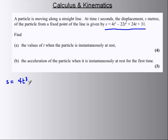So what we are given is the displacement s = 4t³ - 22t² + 24t + 31. Differentiate to get velocity, so ds/dt will give me velocity, which is 12t² - 44t + 24.